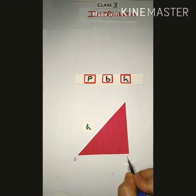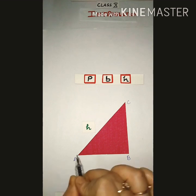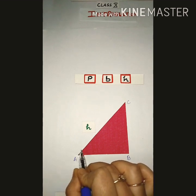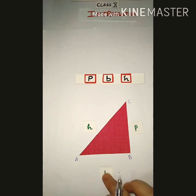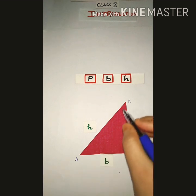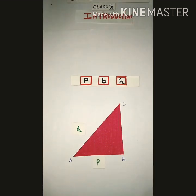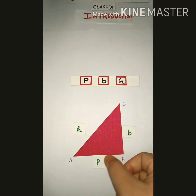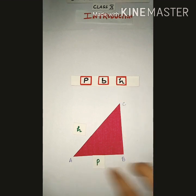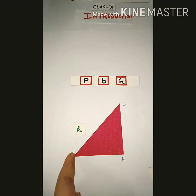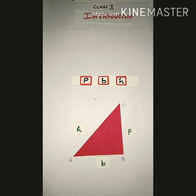Suppose this is a triangle with angles A, B, and C. When we consider angle A, our perpendicular will be this side and the base will be this side. The side just opposite to the angle will be our perpendicular, and the adjacent side will be our base. Similarly, when we consider another angle, the side just opposite to that angle will be our perpendicular and the other side will be our base.